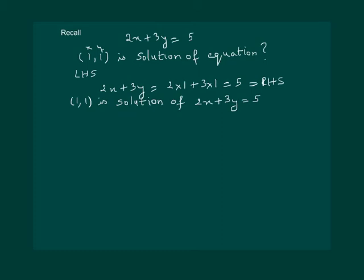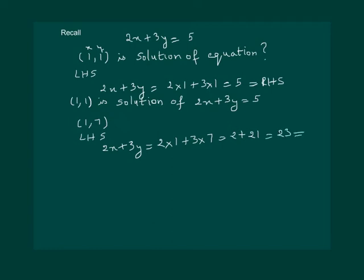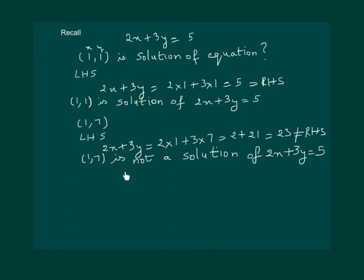Let us check if (1, 7) is a solution of this equation. Substituting in the left hand side: 2x plus 3y, with x equal to 1 and y equal to 7, we get 2 plus 21, that is 23, which is not equal to the right hand side of the equation. Hence we can say that (1, 7) is not a solution of 2x plus 3y equal to 5.